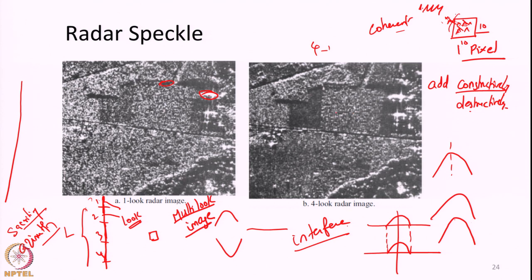Multi-look processing visibly reduces the speckle effect. Beyond multi-look, various image processing filters are also available to reduce speckle further. In this lecture we discussed the image characteristics and relief displacement features of radar images — foreshortening, layover, and shadow — as well as radar speckle, which is a characteristic of synthetic aperture radar systems. With this we end this lecture. Thank you very much.